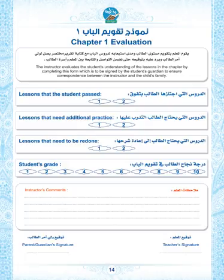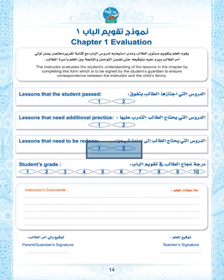This page is mainly used as communication between the instructor and the parents, so the student's guardian has an idea of where the student has difficulty and weakness. You can see the first question covers the student's abilities and which lesson he or she passed, then the lessons that need practice, and finally lessons that need to be redone.